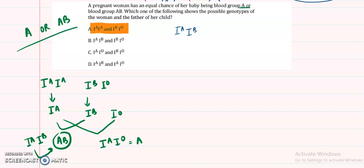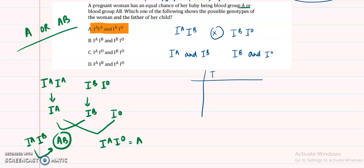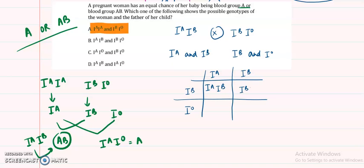Let's verify the other options. For option B — IAIB crossed with IBIO — the gametes are IA and IB from the woman, and IB and IO from the man. The Punnett square gives IAIB (AB), IBIB (B), IAIO (A), and IBIO (B). Since B blood group also appears, this option is ruled out.